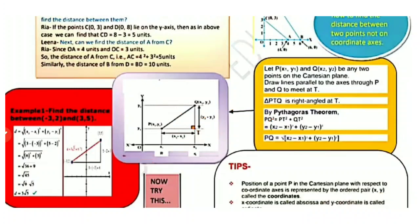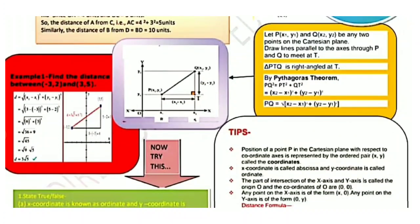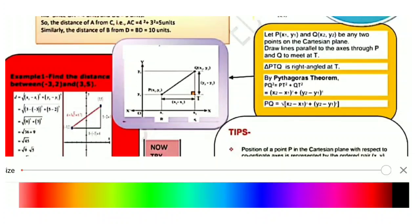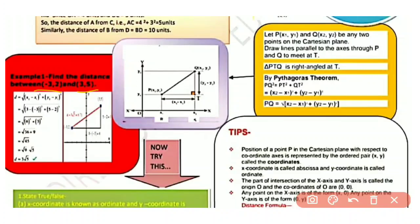The distance formula gives the distance between two points on the plane. Now applying it to find the distance between (-3, 2) and (3, 5): d = √[(3 − (−3))² + (5 − 2)²] = √[(6)² + (3)²] = √[36 + 9] = √45 = 3√5. So the distance between the required points (-3, 2) and (3, 5) is 3√5.